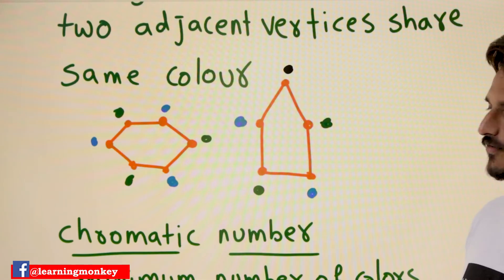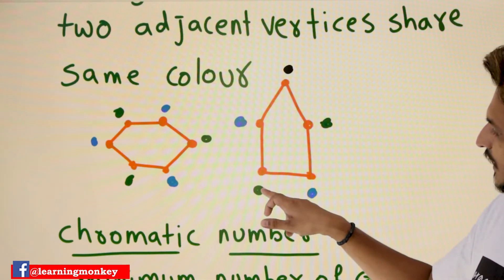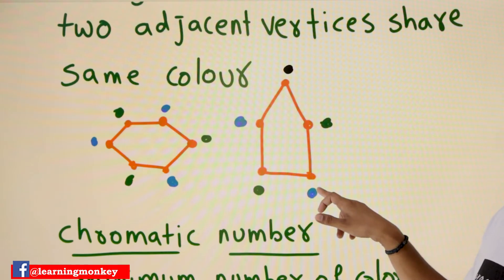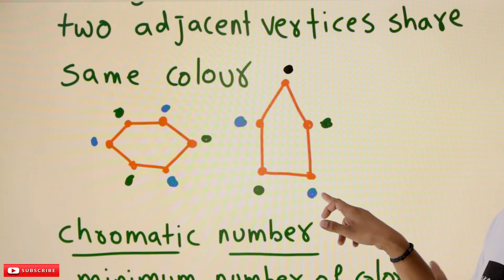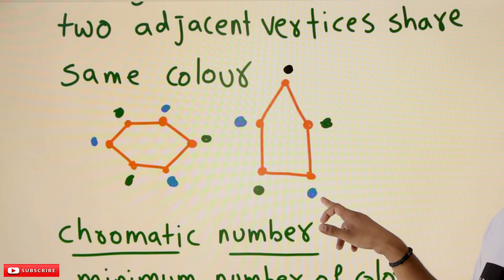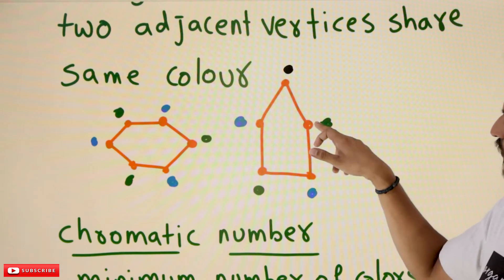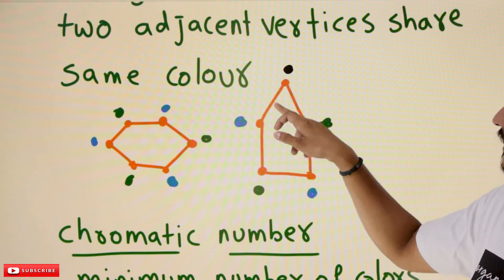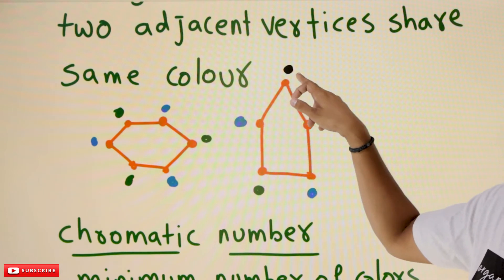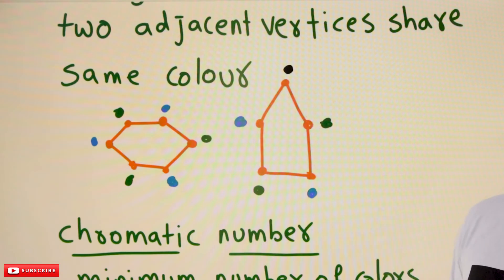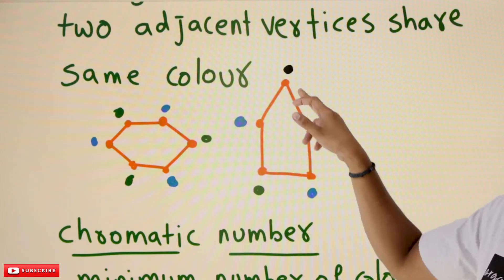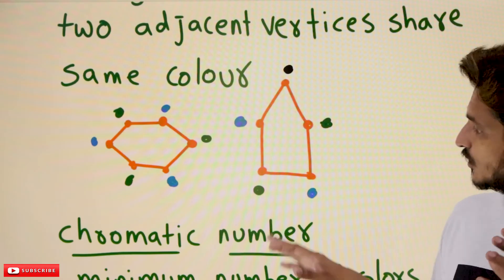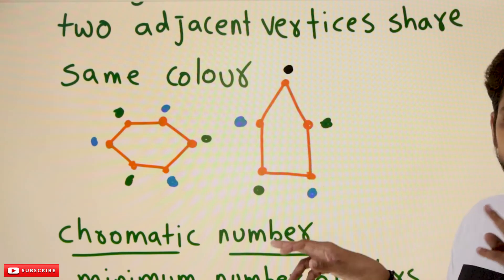This is the next graph. How many colors are needed to color this graph? If you place green here, these two are adjacent, so we need to place another color — blue. If it is blue, go with green; if it is green, go with blue. Then here we go with black. Here you cannot take blue or green, so the minimum number of colors needed to color this graph is three.